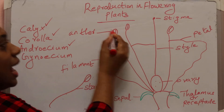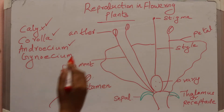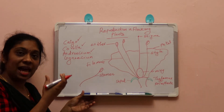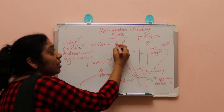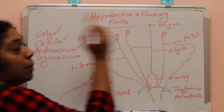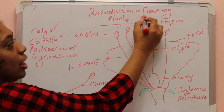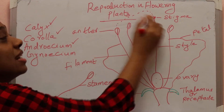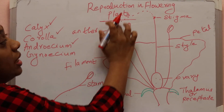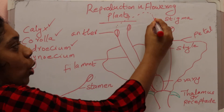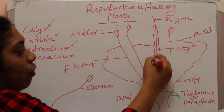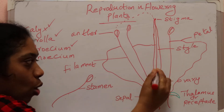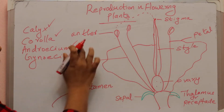Within the anther there are pollen sacks — that is, at the top of the filament, a cluster of microsporangia is present. Within the pollen sack there are pollen grains. These pollen grains will migrate and go to the stigma. Stigma is sticky in nature, so pollen grains get stuck there. After the pollen grains migrate to the stigma, a pollen tube develops downward toward the ovary. These are the male reproductive parts.